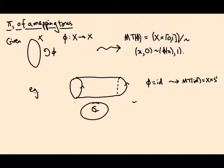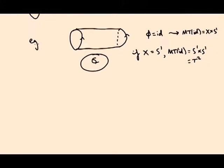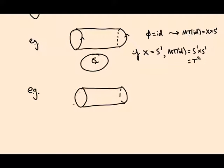So if X is the circle, the mapping torus of the identity is S¹ × S¹, which is the torus. Hence the name mapping torus — it's a torus-like construction that depends on the mapping φ. Another example: a non-trivial mapping torus would be the same thing — a circle across an interval — but identifying the two ends via a map that switches the direction of the arrow, like a reflection.